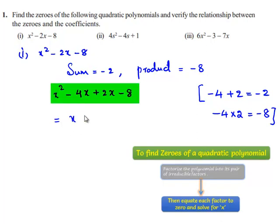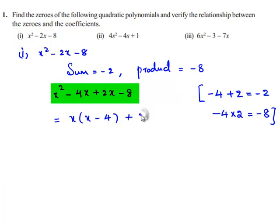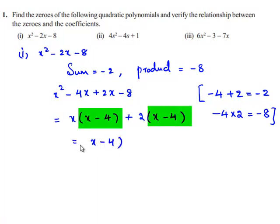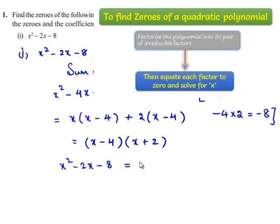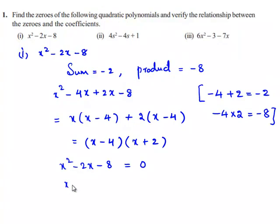Taking x as common, we get x minus 4 plus 2 times of x minus 4, which is x minus 4 times of x plus 2. In order to find the zeros of the polynomial, the given polynomial x squared minus 2x minus 8 must be equated to 0. So x squared minus 2x minus 8 can be written as x minus 4 times of x plus 2, which is equal to 0.